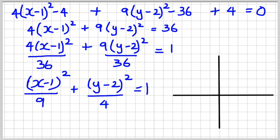To sketch this, the center is at (1, 2). Because a² is 9, a is 3, so I go 3 to the right and 3 to the left. Because b² is 4, b is 2, so I go 2 above and 2 below. Now I have the general shape of my ellipse — there it is. That's how you solve this problem by completing the square. Thanks for watching.